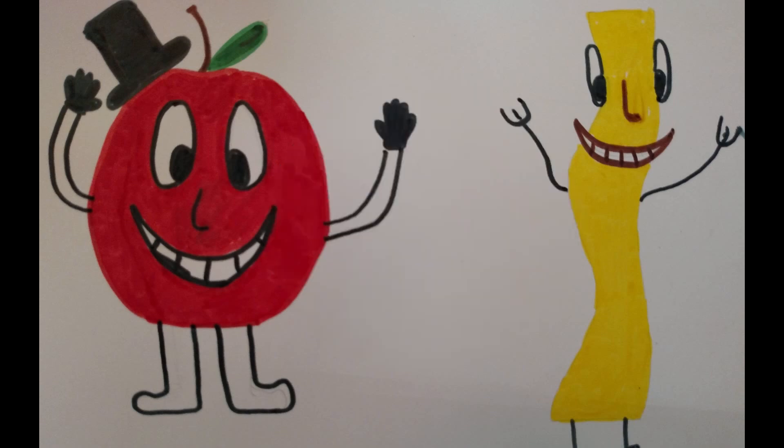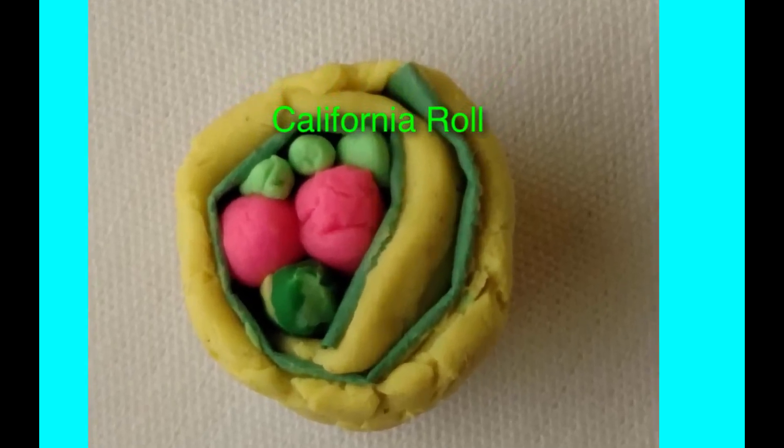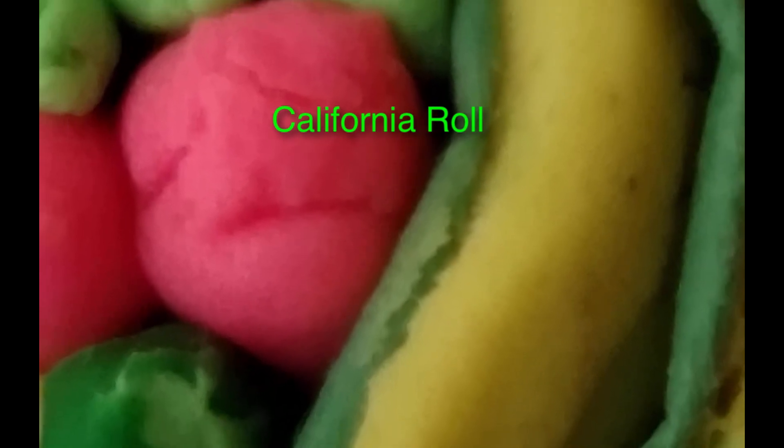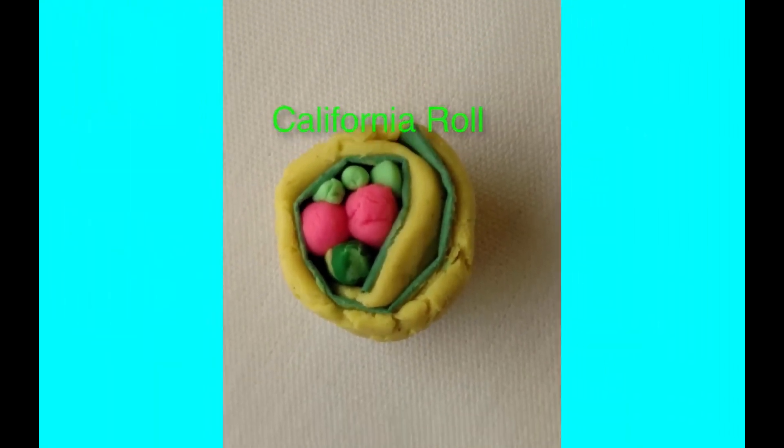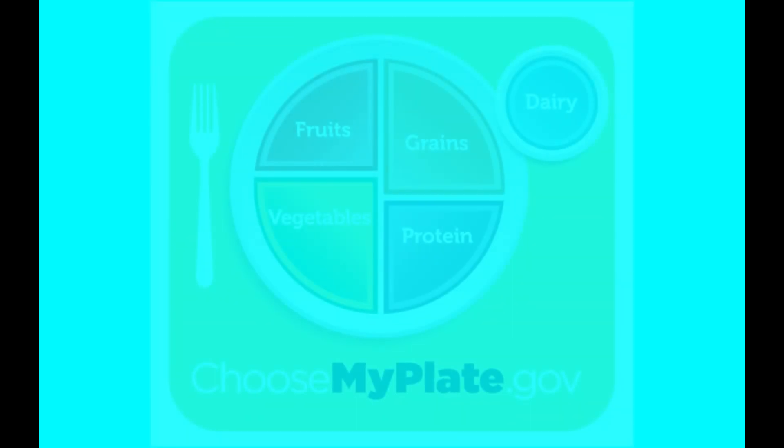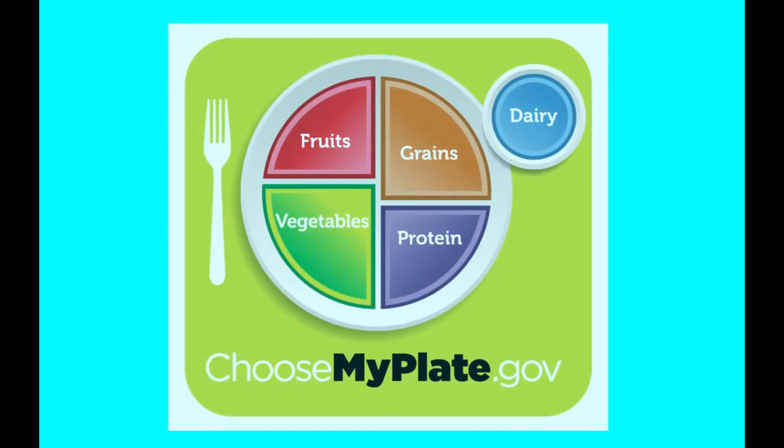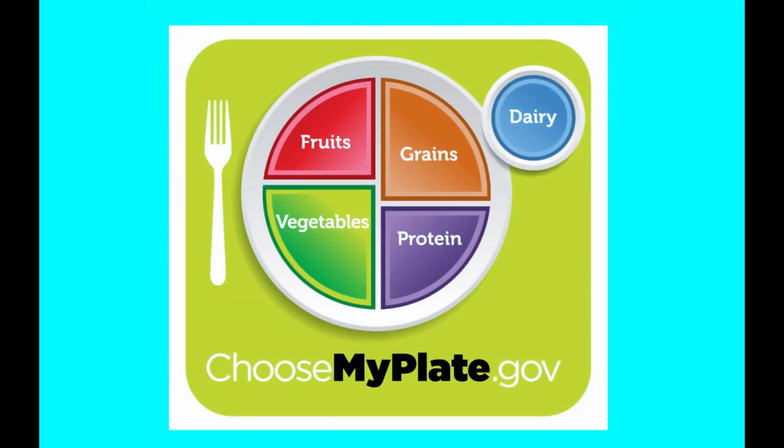Suppose you went out to eat with your friends and decided to have a nice piece of sushi, say California roll. You'd be making a good start to eating some things that are very good for you. Let's take a look at the plate icon from ChooseMyPlate.gov. It gives you an idea of what you should eat a lot of and what you should eat sparingly.